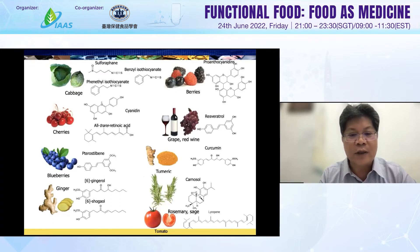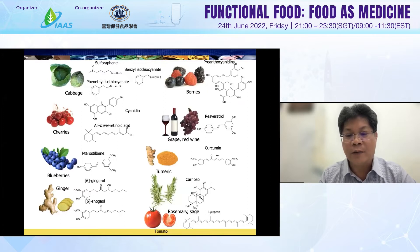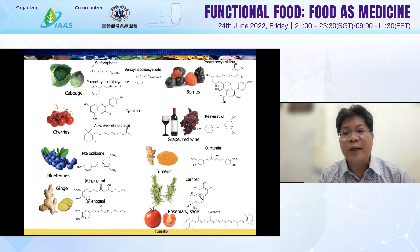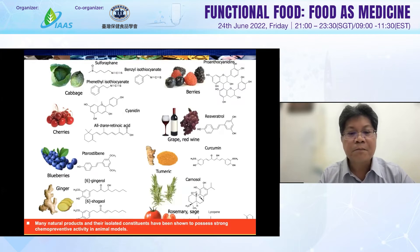And ginger-derived compounds such as curcumin from turmeric, and zingerone from ginger. These are very interesting compounds that contribute great anti-inflammatory activity. We can also see resveratrol from grapes and red wine contributing to bioactivity. Many natural products and their isolated constituents have been shown to possess strong chemopreventive activity in animal models.